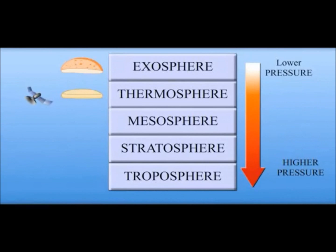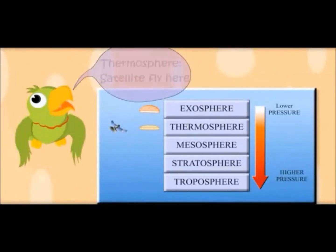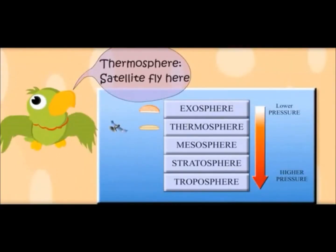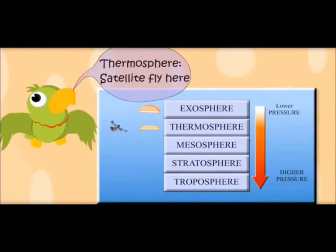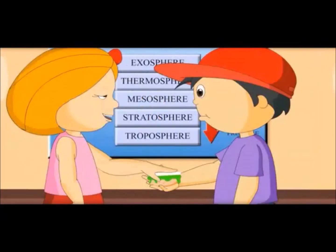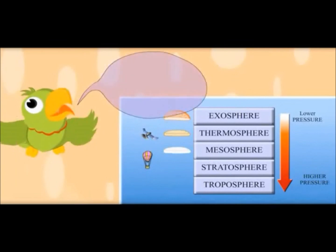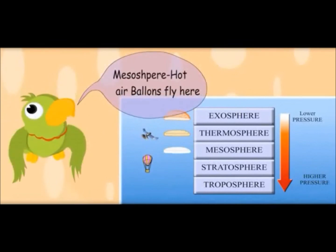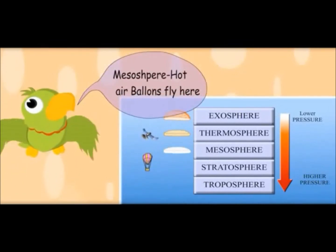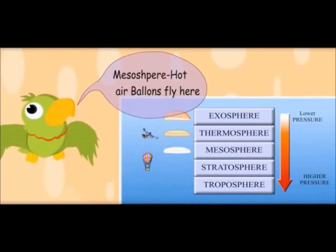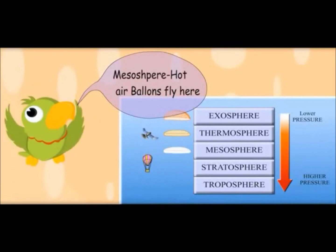You are very smart! Thermosphere — satellites fly here. This layer is called the mesosphere. Hot air balloons go up to this layer. Mesosphere — hot air balloons fly here.